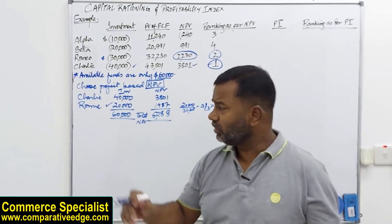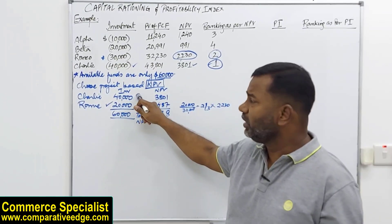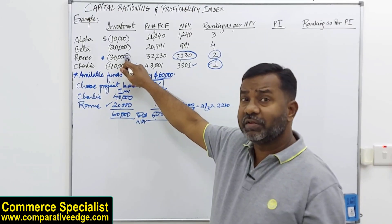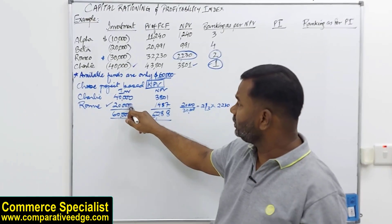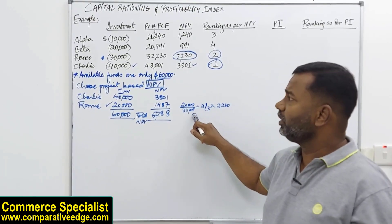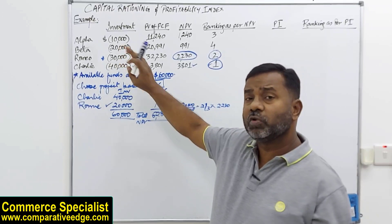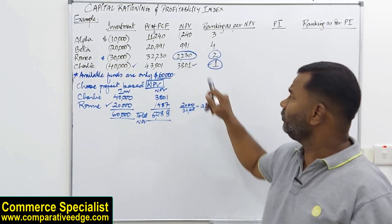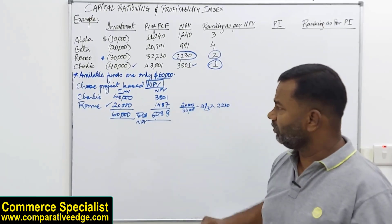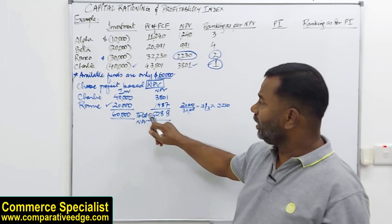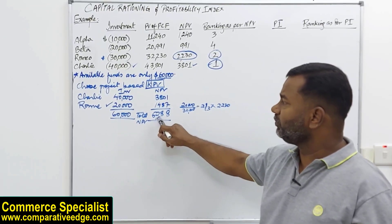And then the second highest is 2,230, it requires an investment of 30. I have only 60,000. 40,000 has already been invested, so only 20,000 can be invested in this project rather than 30. So if only 20,000 is invested, I worked out a fraction: 20 out of 30,000. Out of 30, I am investing only 20, so that's two-thirds of the amount. So it will entitle me for two-thirds of the NPV, which is 1,487. As a result, I have invested all the money I had, but my total NPV comes to 5,288.